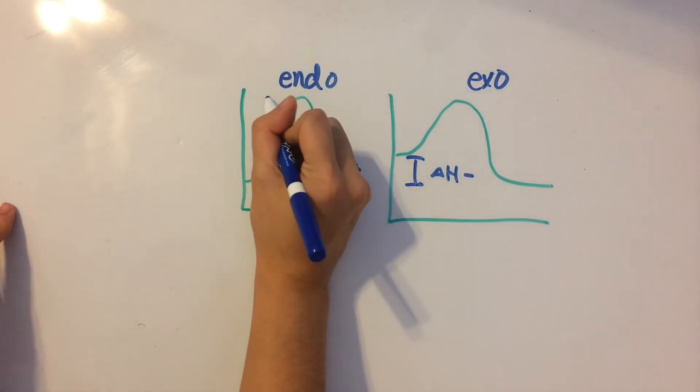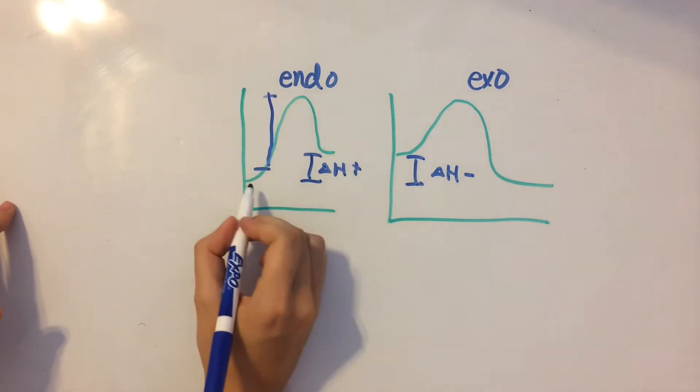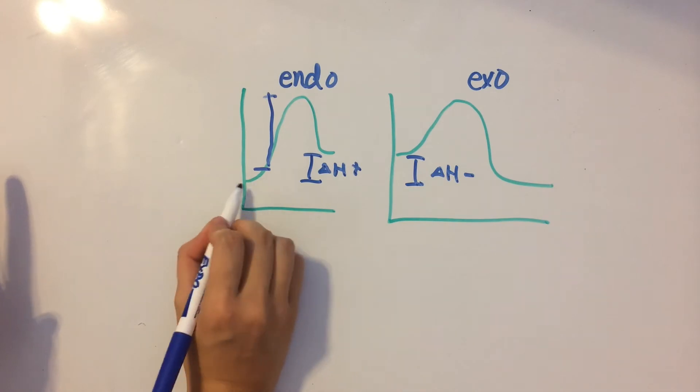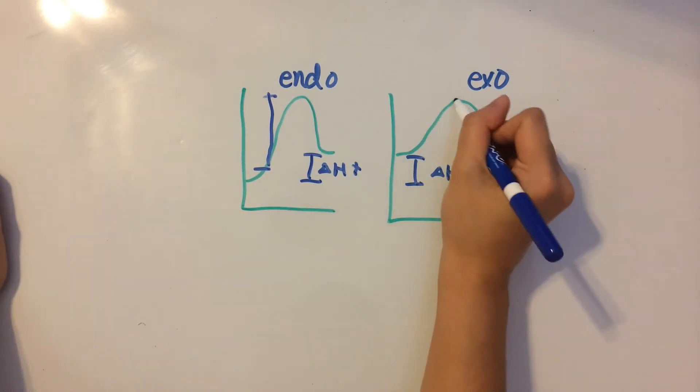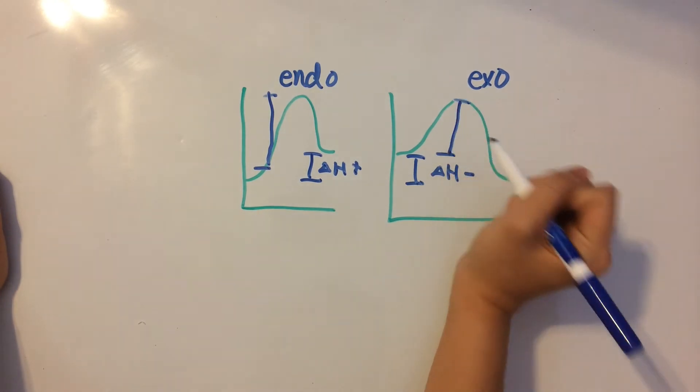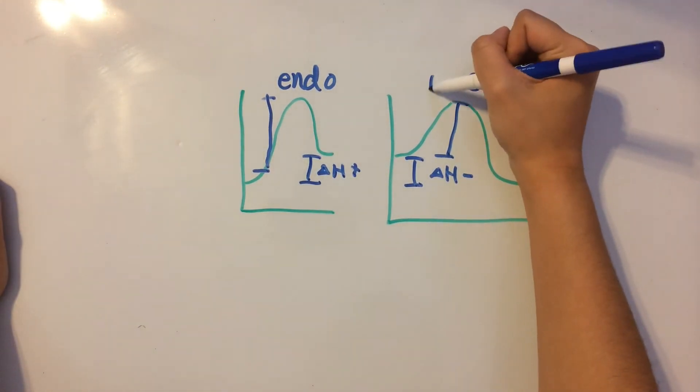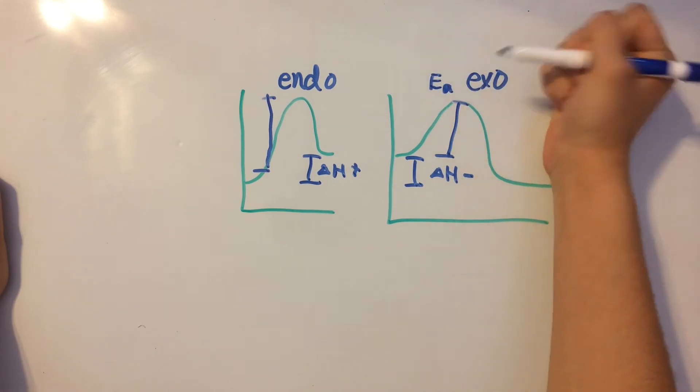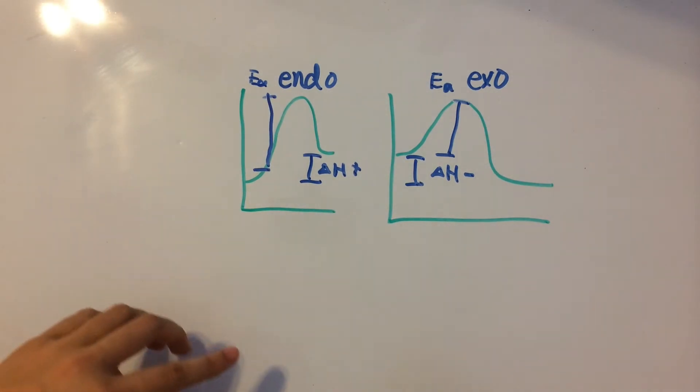Now, on to activation energy. That's going to be the difference in the potential energy of the reactants and the highest point on the graph. So over here, it's going to look kind of like this. And we denote activation energy using E sub A. So that's just going to be the activation energy for both.